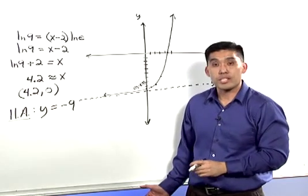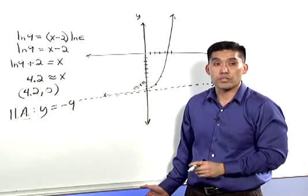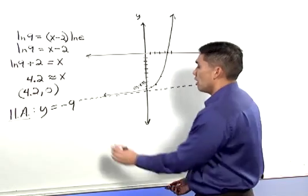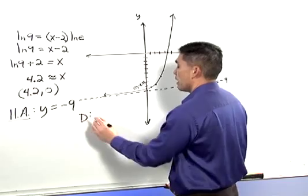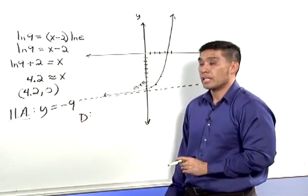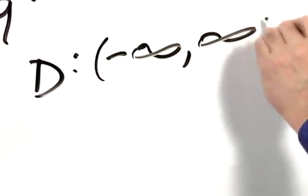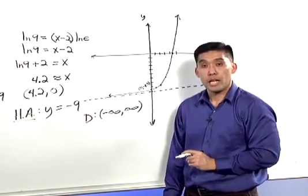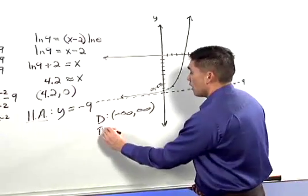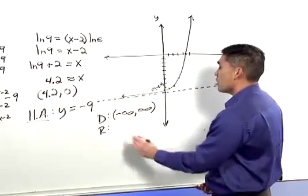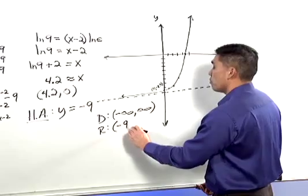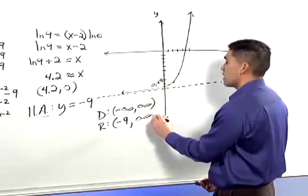Let's first find the domain. The domain, like with every exponential function, is negative infinity to positive infinity. And the range: the range is from negative 9, open, to positive infinity.